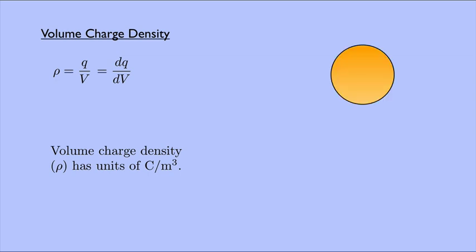So imagine I have a sphere of radius R and total charge Q. Then rho could be Q over 4 thirds pi R cubed. That's the volume of a sphere. Which could also be dQ over dV, a little bit of the charge over a little bit of the volume.